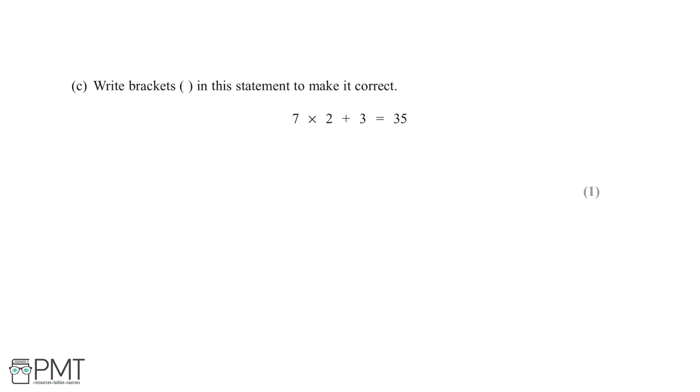Therefore, in order to make this statement correct, we can put brackets around the 2 plus 3. This means we'll do the 2 plus 3 equals 5 before we multiply it by 7. This question is worth one mark, and this is for the correct answer.